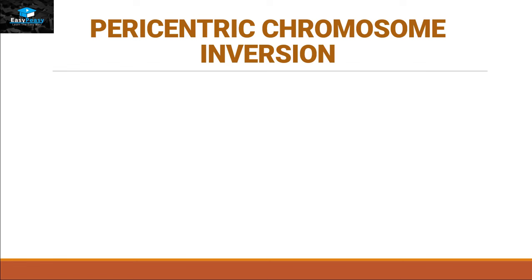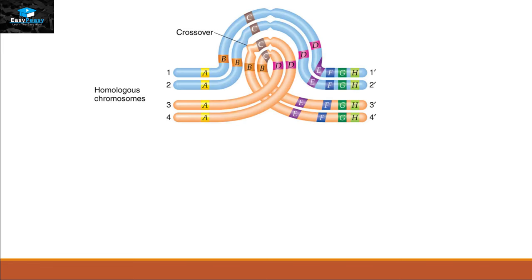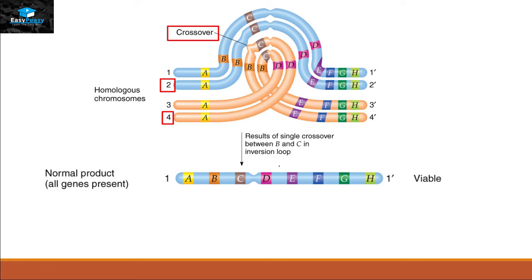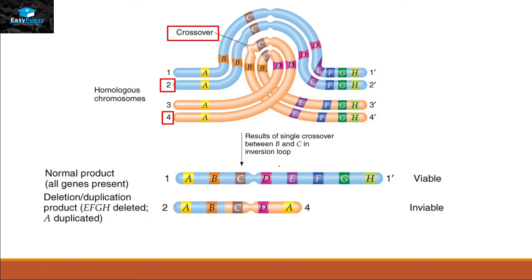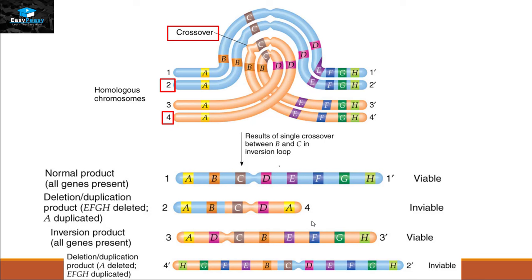For pericentric chromosomal inversion: we take a normal chromosome pair and an inverted chromosome in which the inversion is present and the centromere is involved. In meiosis prophase 1, the inverted chromosome makes a loop, and crossing over occurs between chromatid 2 and chromatid 4. After crossing over, chromatid 1 is a viable gene product. Chromatid 2 is inviable because it faces duplications and deletions — gene A is duplicated while it does not have genes E, F, G, H. The third condition has inversion mutation but is still viable and can produce gametes. The fourth condition has deletion and duplication problems as it does not have genes A, B, C, but has a duplication of E, F, G, H.